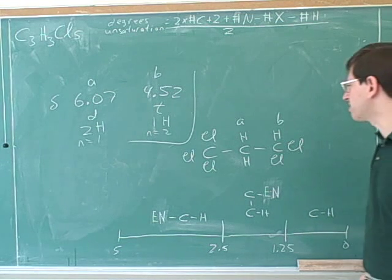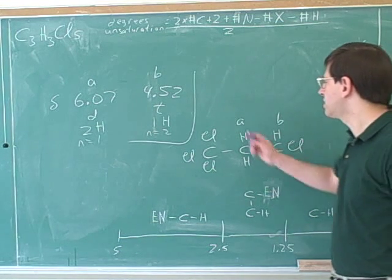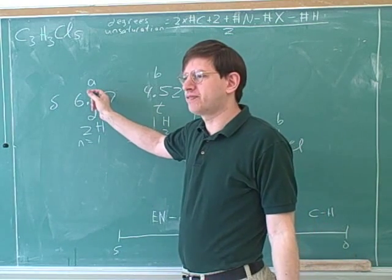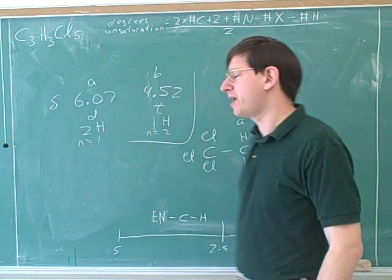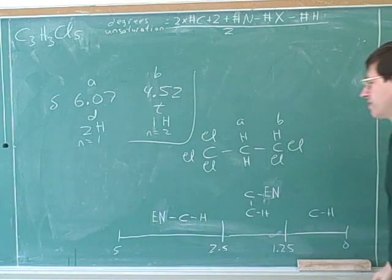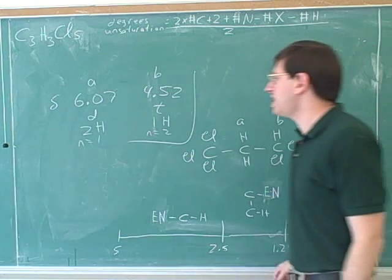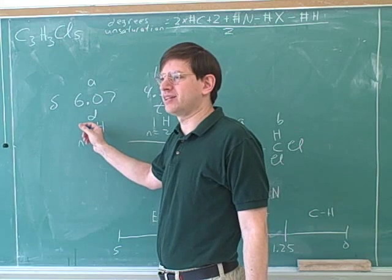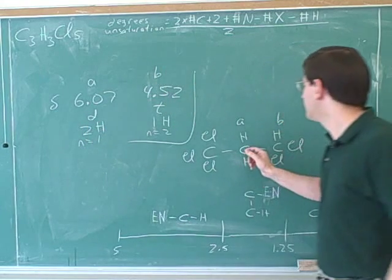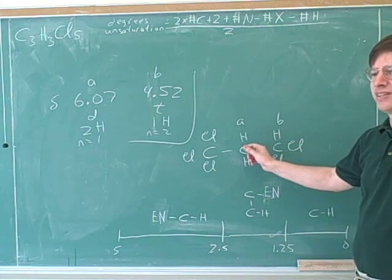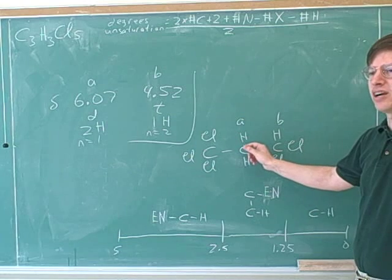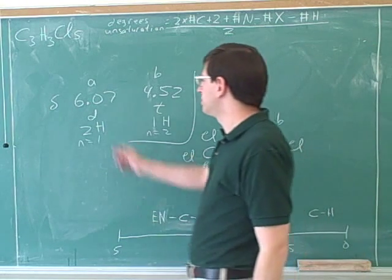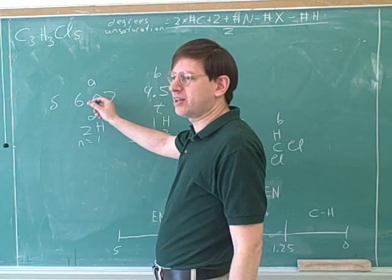OK, I guess here's my concern. Notice that group A has a very far left chemical shift. Group A has a very far left chemical shift, which would seem to suggest that these should be on a carbon with electronegative elements. But this carbon doesn't have any electronegative elements — this carbon here doesn't have any electronegative elements. So it's hard to see how it could be pulled so far to the left.